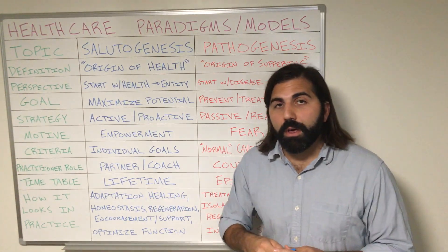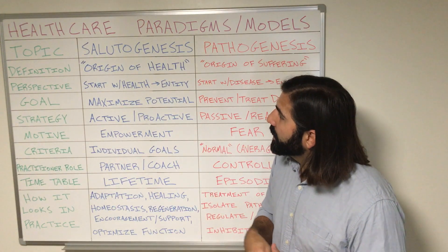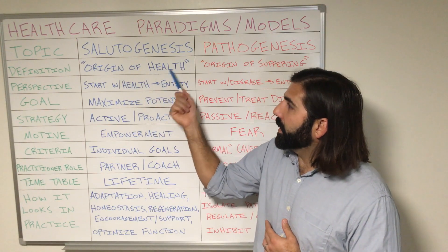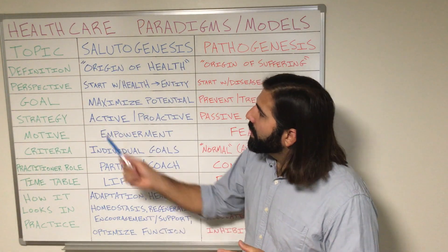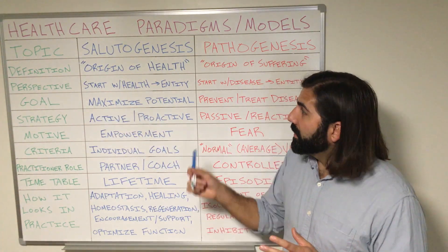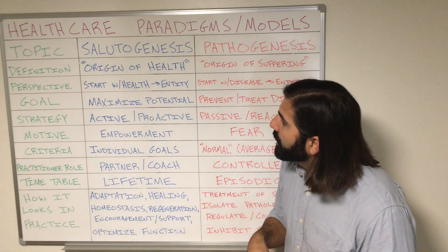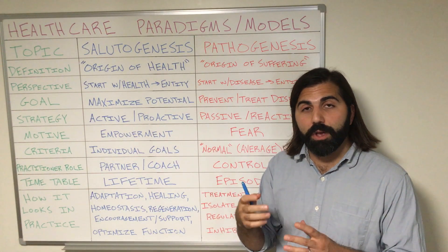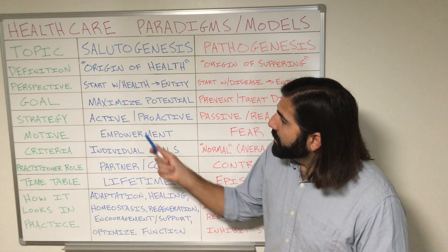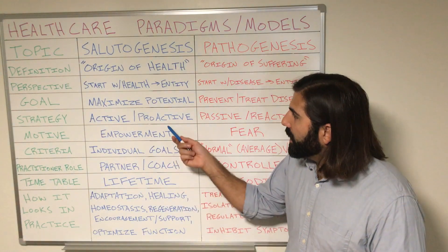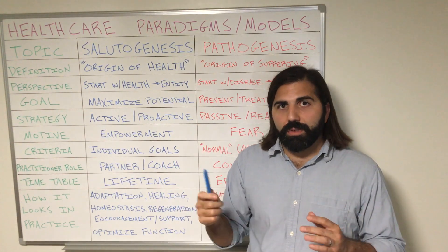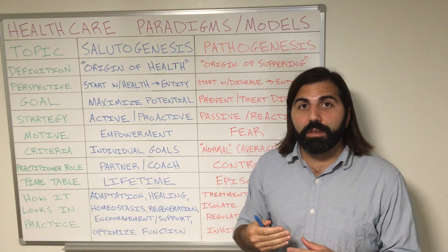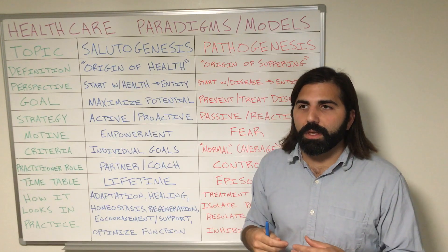Now let's look at the flip side of that coin: salutogenesis. The literal definition of the word salutogenesis means origin of health. Saludo means health, and genesis means origin of. From this perspective, the starting point is health — health will be the entity or thing that needs to be addressed. The goal of the salutogenic model is to help maximize the potential expression of health in that individual person. The strategy is going to be very active and proactive in nature. Health needs to be something constantly cultivated and grown — you have to be constantly growing health.